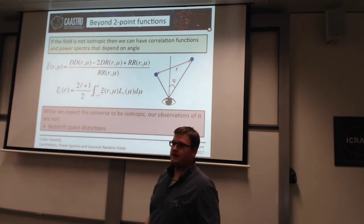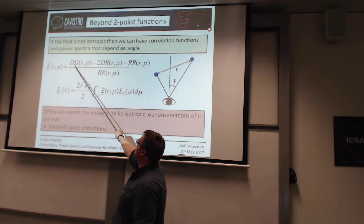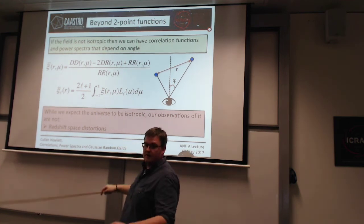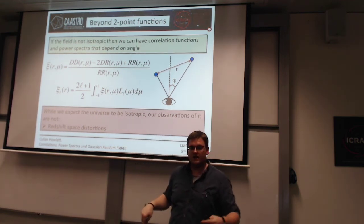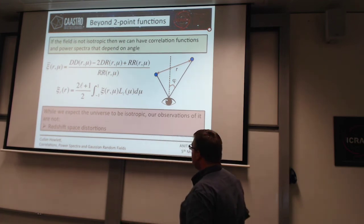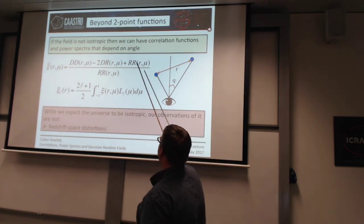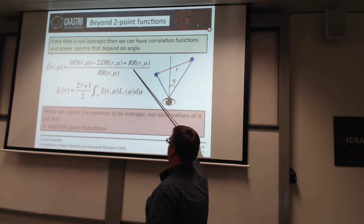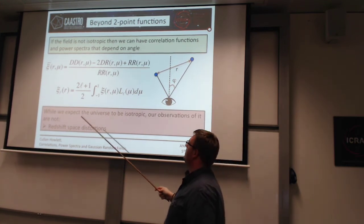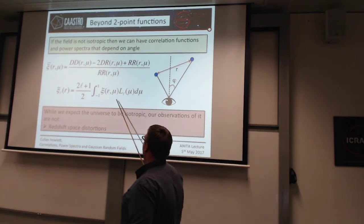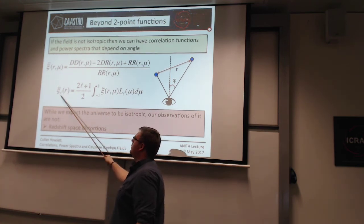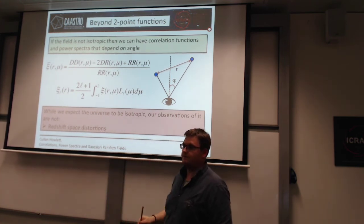This mu here is just the cosine of theta. Your correlation function now has to be written in terms of r and mu. But you can still use the same estimator — count how many pairs of galaxies are separated by r and mu, giving bins in both r and mu. What we commonly do in large scale structure is to convert these back to functions of r using multipole decomposition.